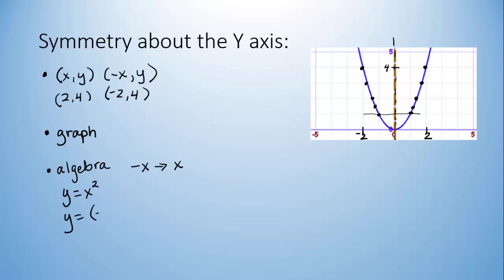So in this case, we'd put in negative x and simplify, and you get the original equation back again. Those are the three ways that we look for symmetry.